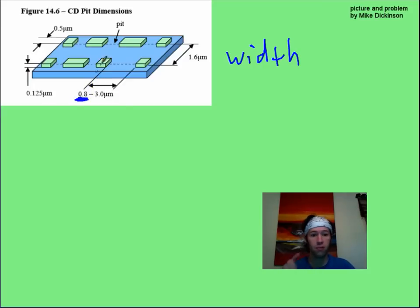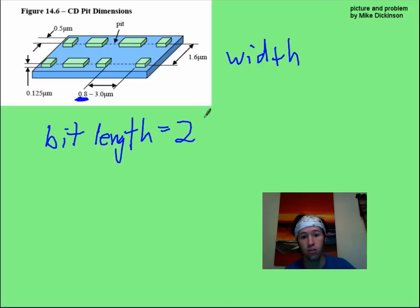Now, if you want information, you're going to have to have a pit and a land together, and so if 0.8 is the smallest distance, we're going to say a bit length. It's going to have to be two of those. So that's two times our 0.8, that's going to give us our 1.6 micrometers. We're going to use that in the next problem.